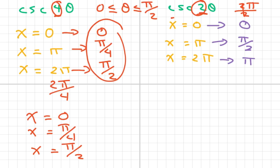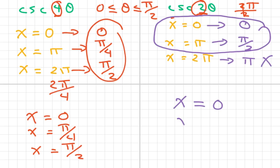Now what happens here is that these two work, but not this one, because pi is too big. So my asymptote lines are going to be x equals 0, and x equals pi over 2.